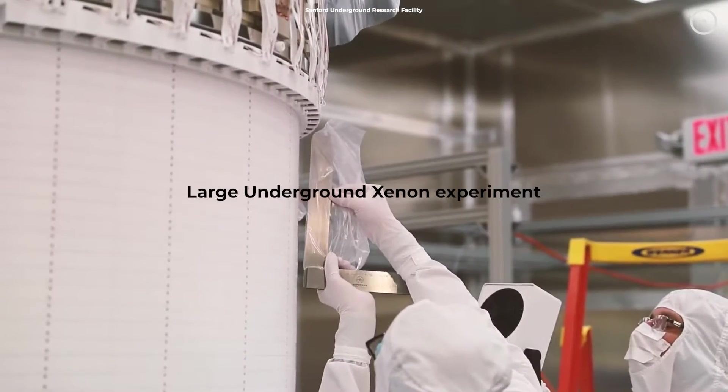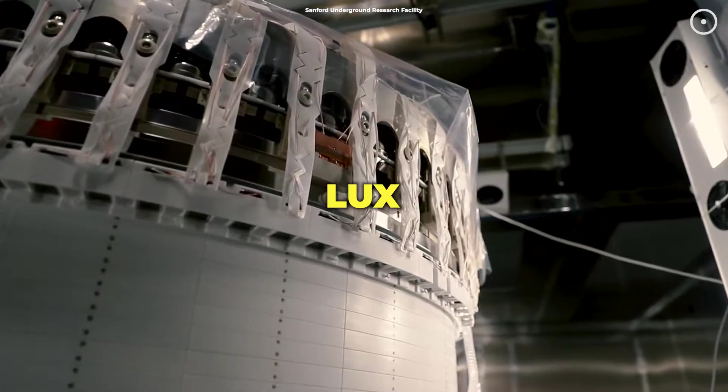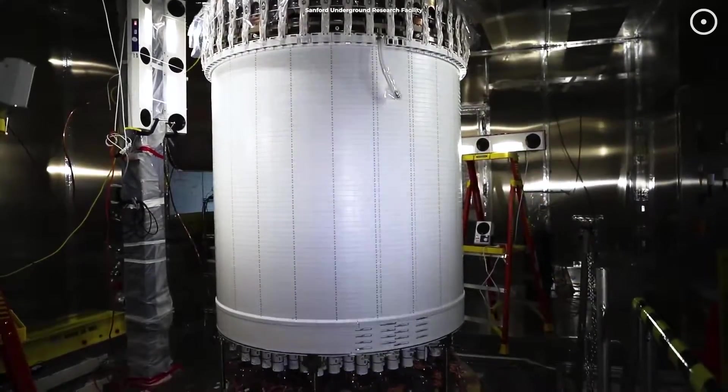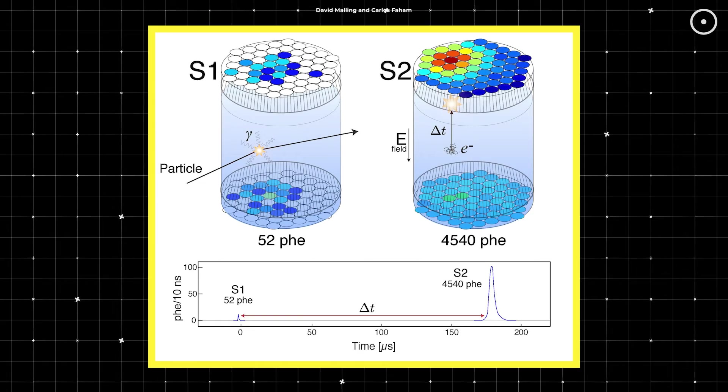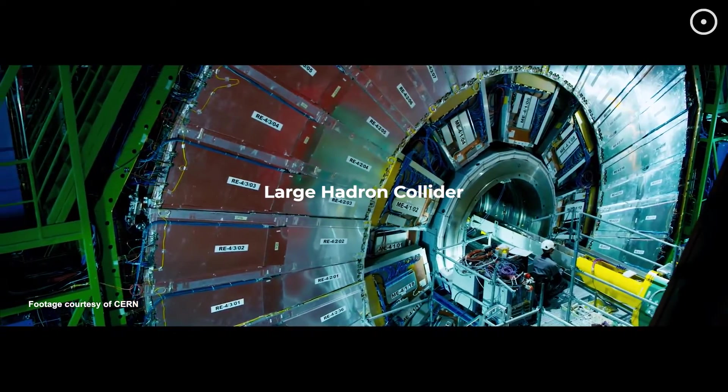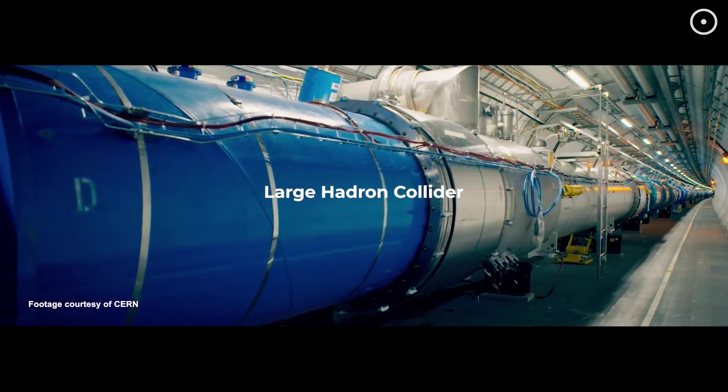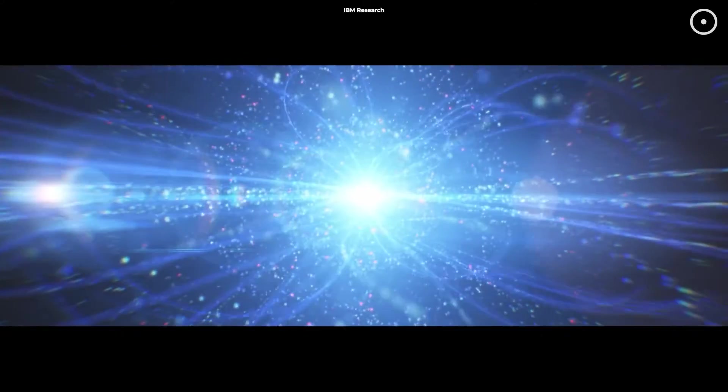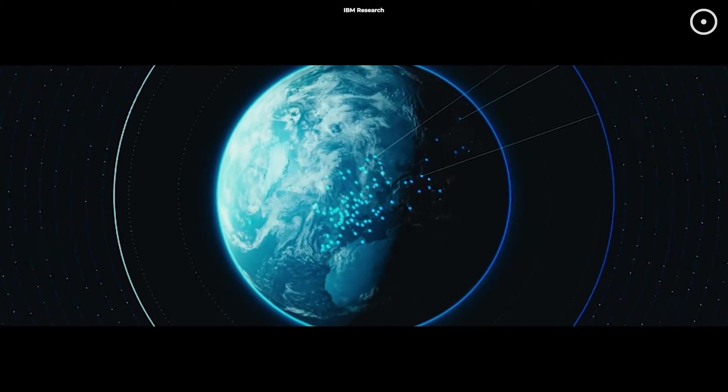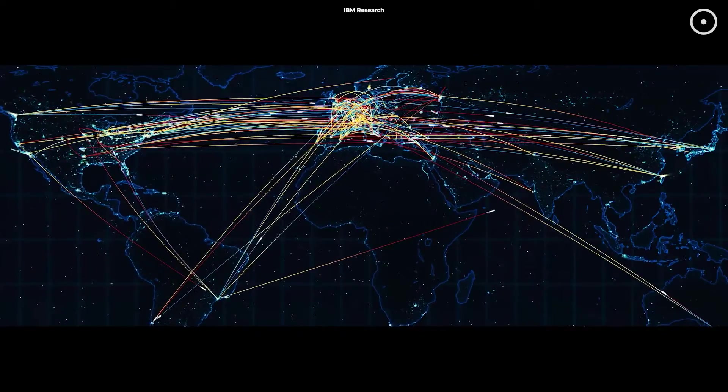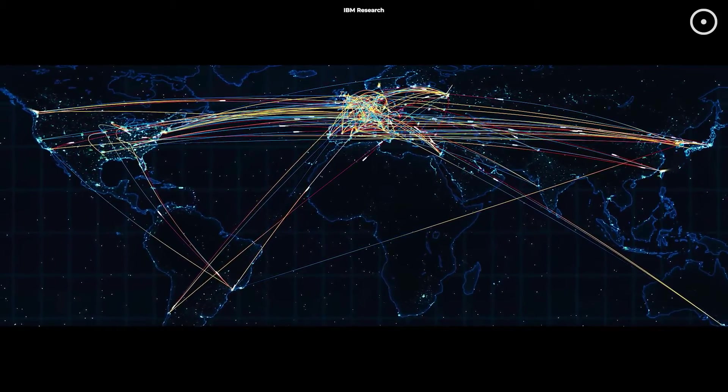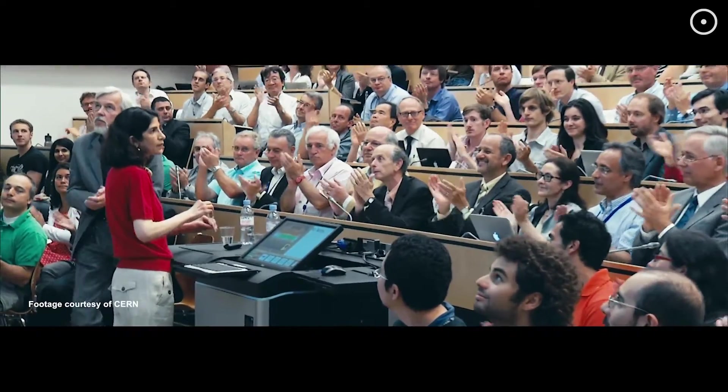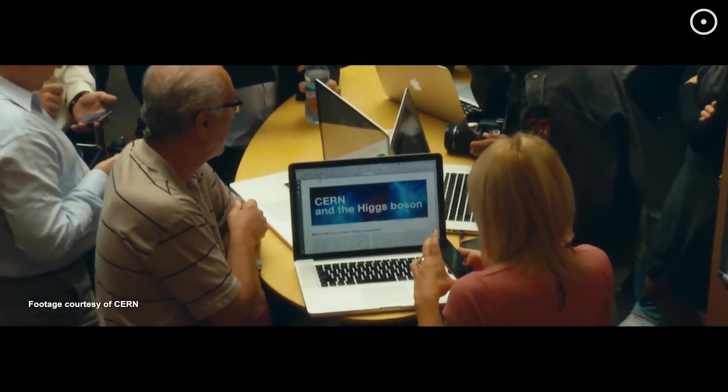One of these experiments is the Large Underground Xenon Experiment, or LUX. It uses a tank filled with liquid xenon to try and catch dark matter particles. The idea is that when a dark matter particle hits a xenon atom, it will give off a tiny flash of light. And then there's the Large Hadron Collider in Switzerland. This massive machine smashes particles together at incredible speeds, hoping to create dark matter particles in the process. These experiments are like cosmic detective work with scientists piecing together clues about the nature of the universe. It's a tough job, but the answers they find could change our understanding of everything.